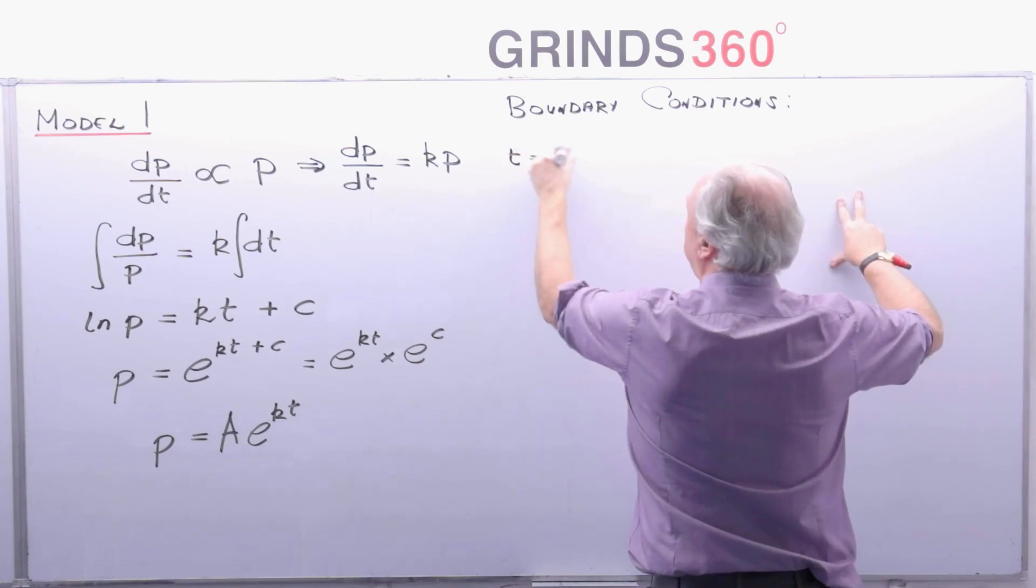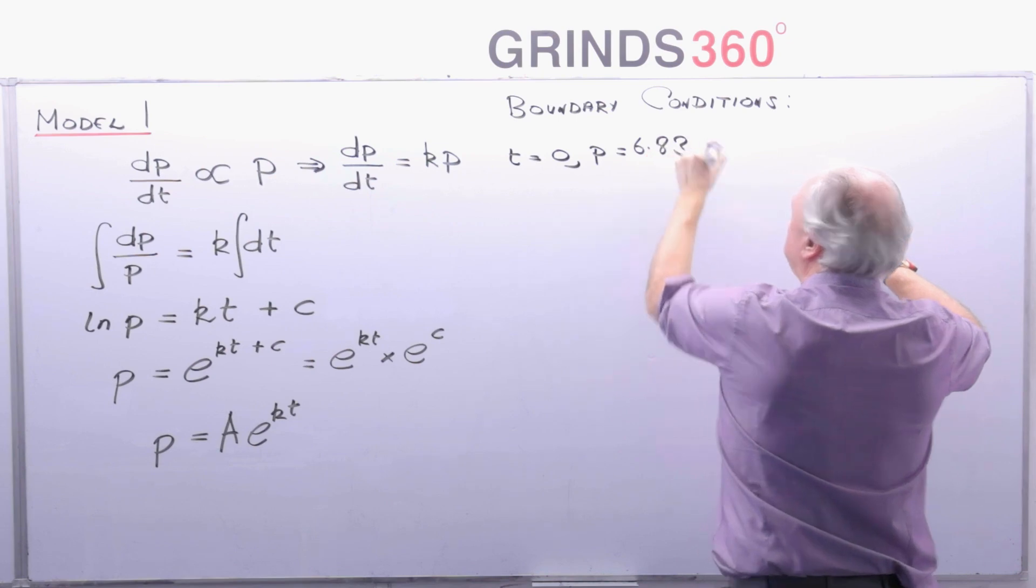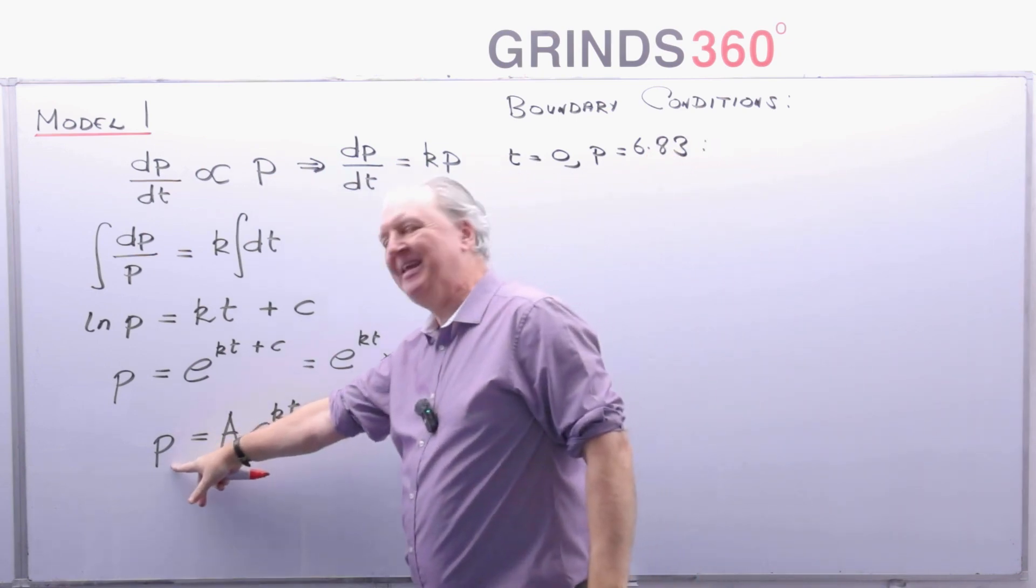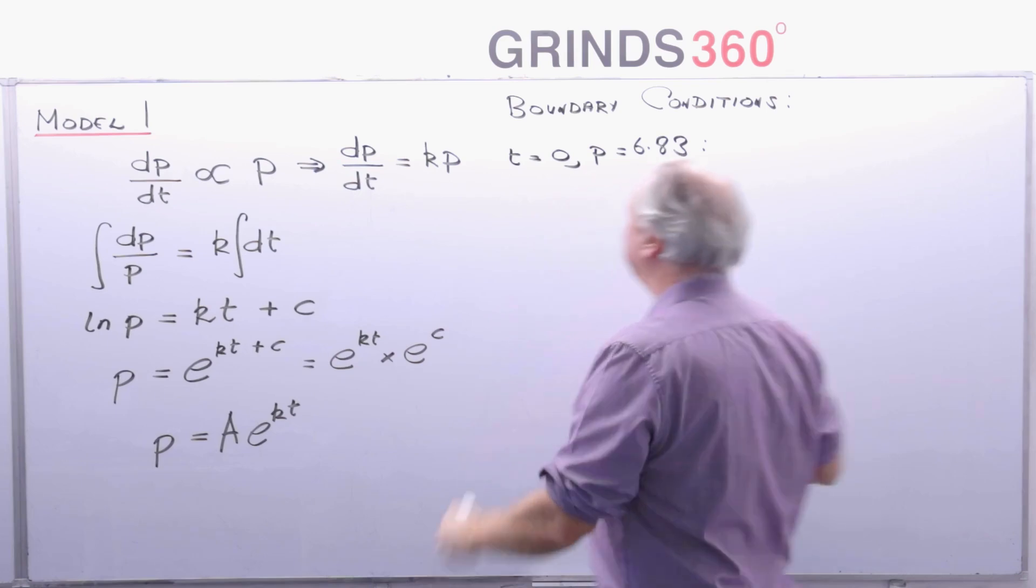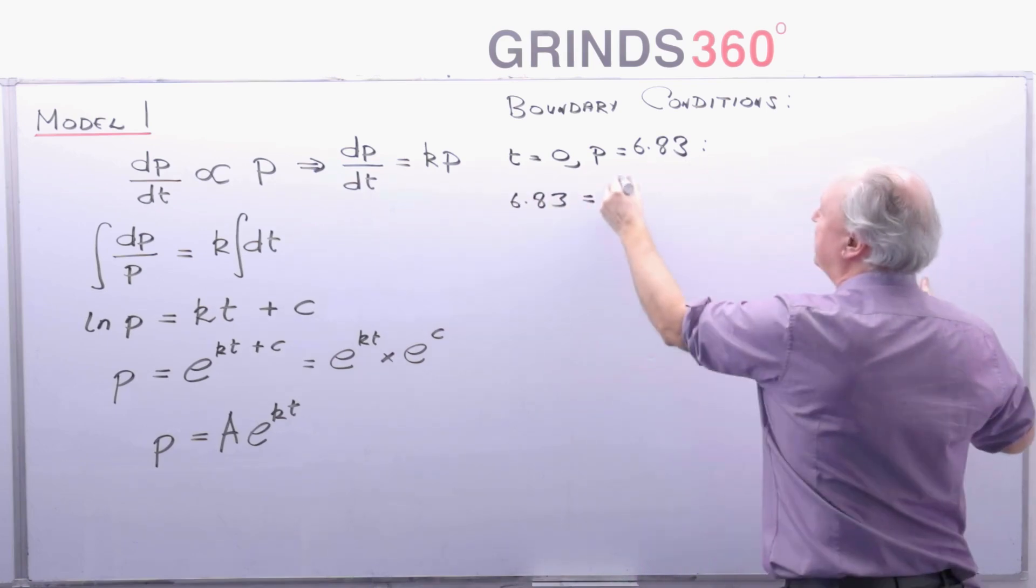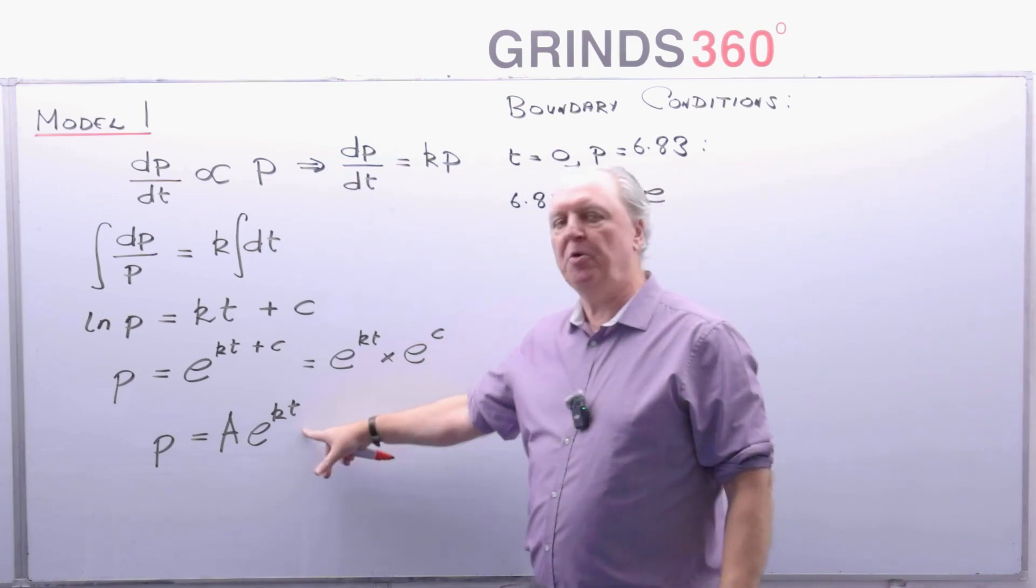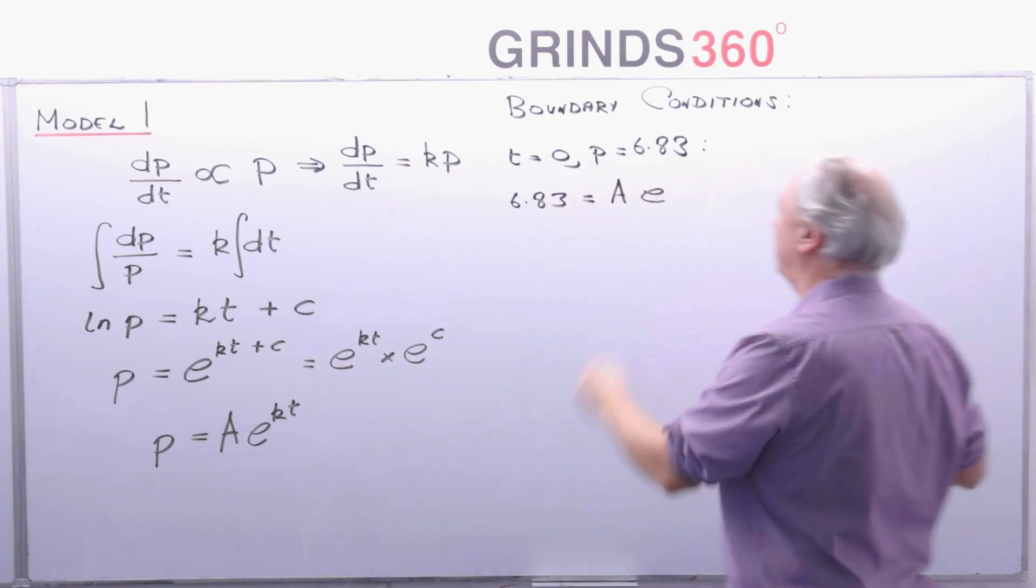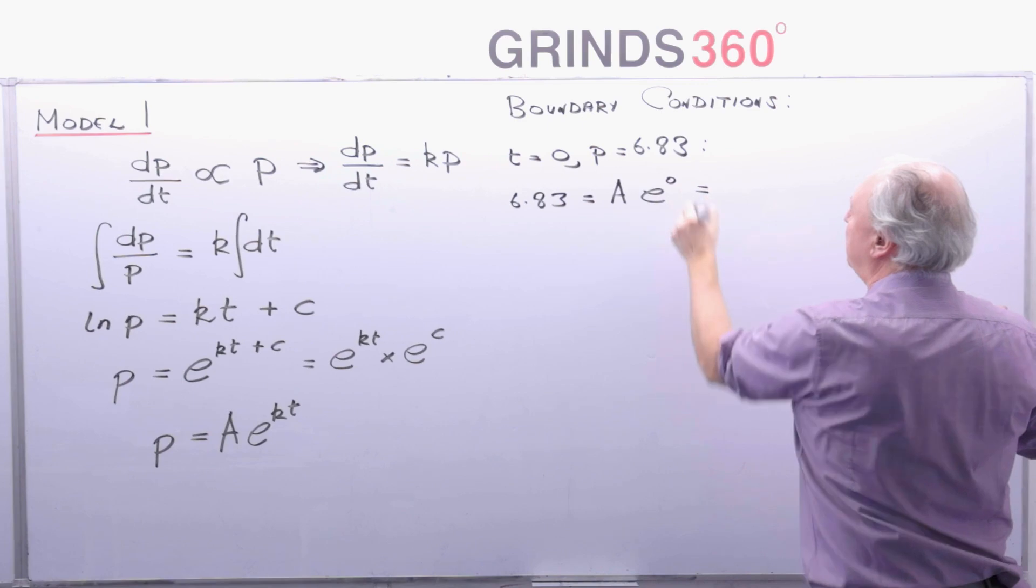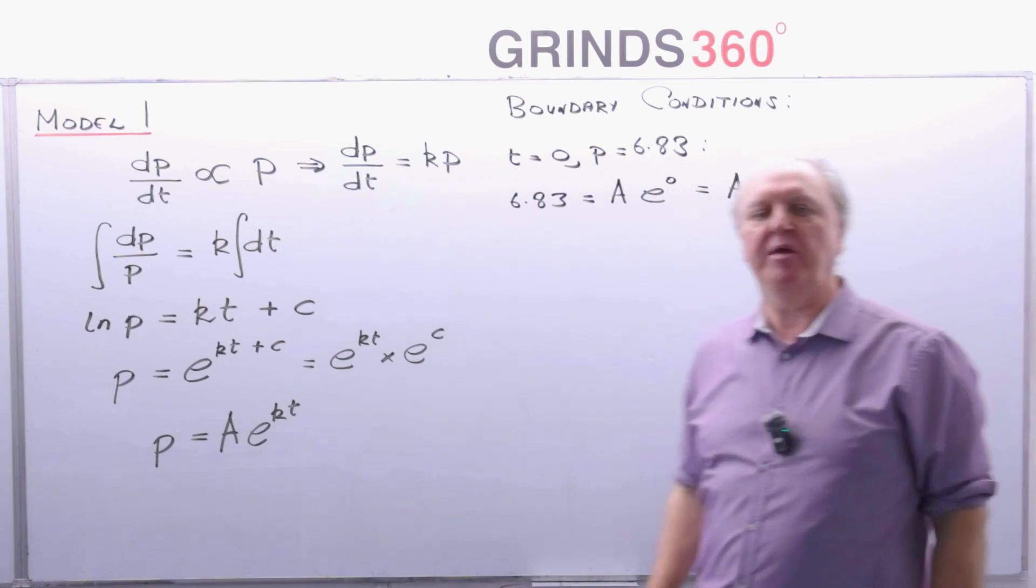So let's start off my first boundary condition. t is equal to zero, p is equal to 6.83. So let me put it in here. So p is 6.83. That's equal to A times e to the power of zero. And e to the power of zero of course is one. So therefore A is equal to 6.83 billion.